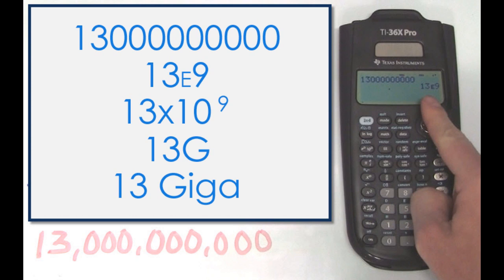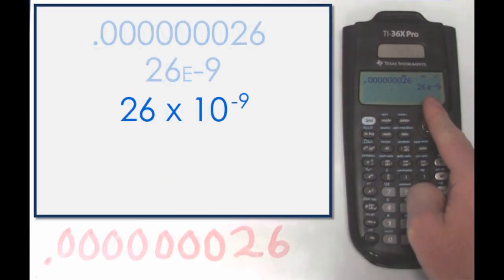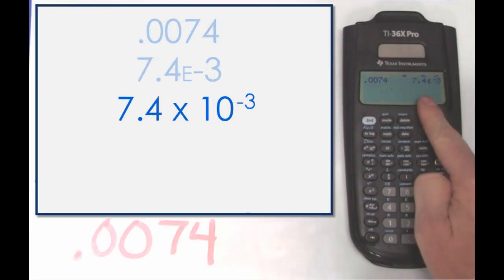In some of the previous examples we had a negative power, where now we have a power that is a positive 9. This is positive because the original number was 1 or greater. Any number that is a decimal or fraction of 1, like our first two examples here, will be a negative power. This does not, however, mean that it is a negative number.